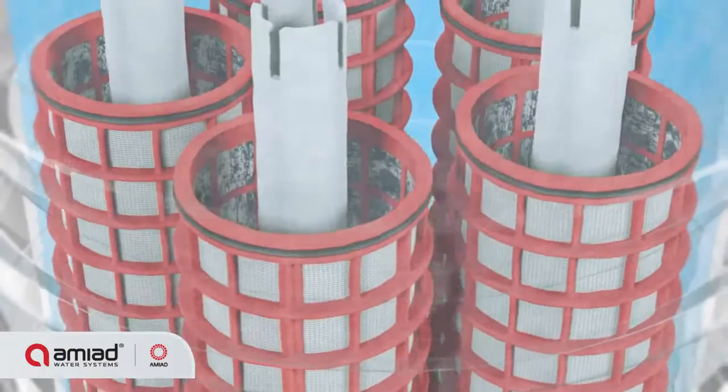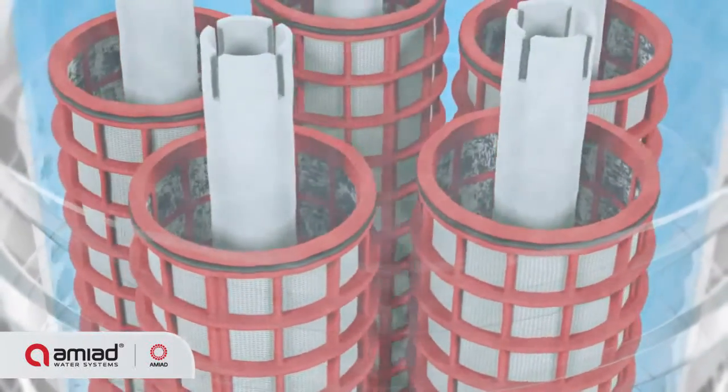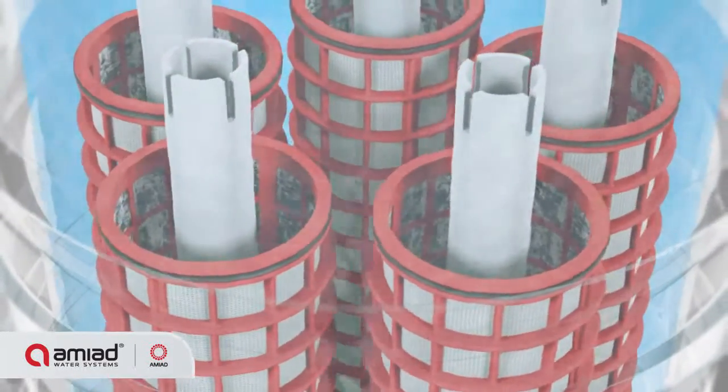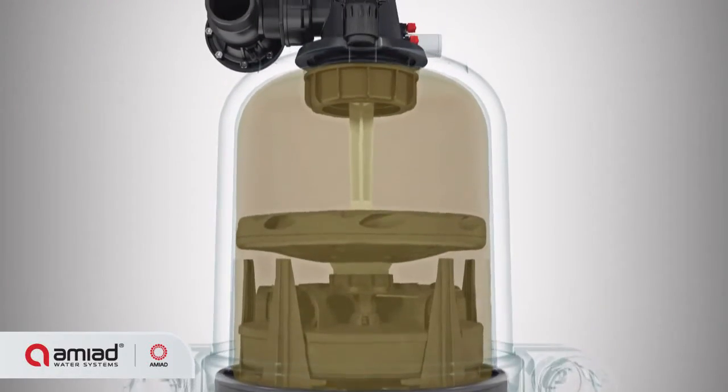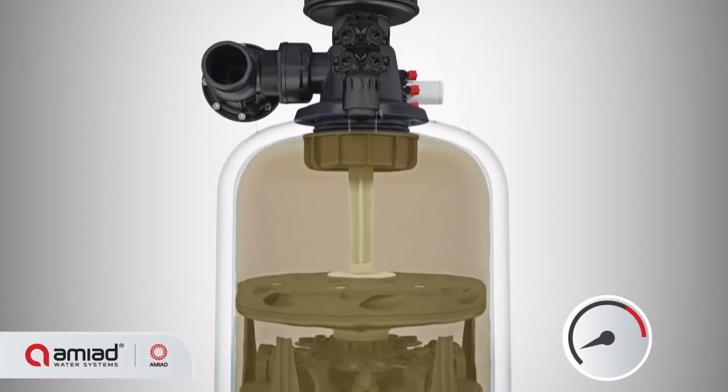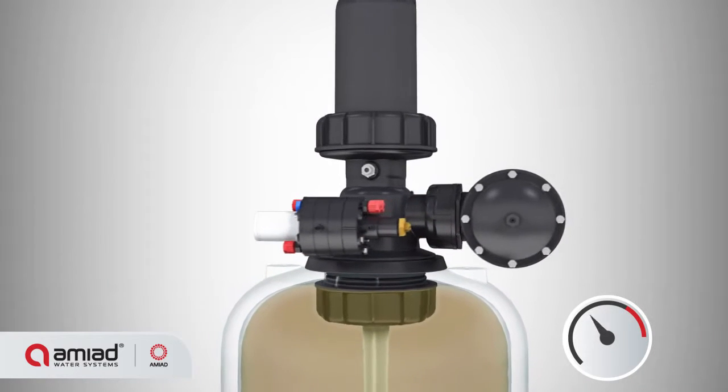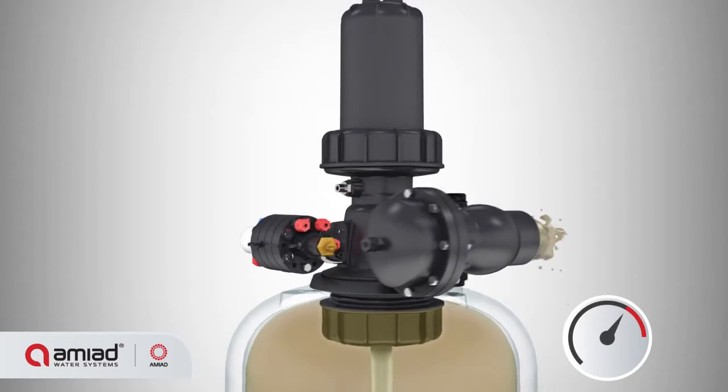The gradual dirt buildup on the screen's inner surface causes a filter cake to develop, with a corresponding increase in the pressure differential across the filter. Once the pressure differential reaches a pre-set level, the system activates its self-cleaning cycle by opening the flushing valve.